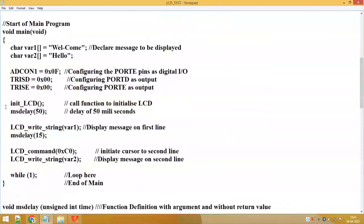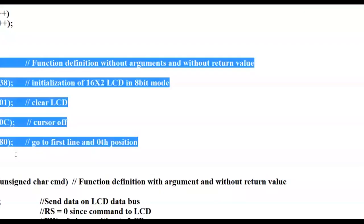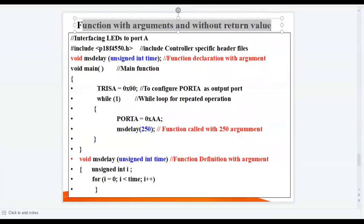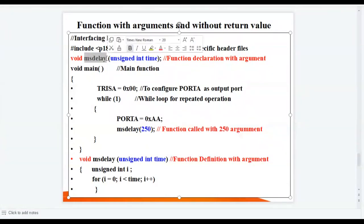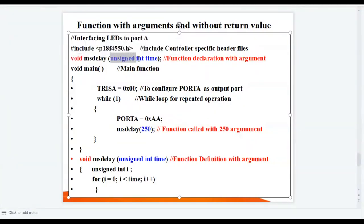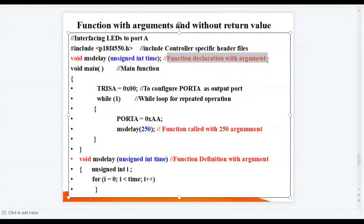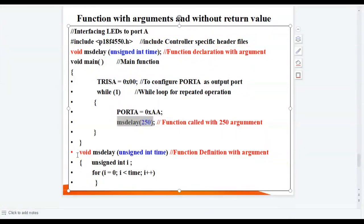Similarly, you can see there are different function declarations, function calls, and function definitions — functions with arguments and without return value. As shown in the program, 'ms_delay' is the function name, it is not returning any value so the return type is void, and the input argument is 'unsigned integer time'. This is the function declaration with argument and without return value. Inside main, the function is called with 250 as the input argument, which will be stored in the 'time' variable.